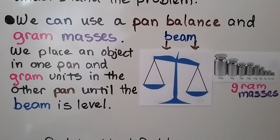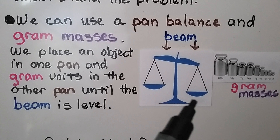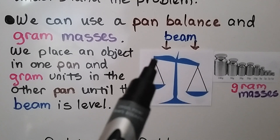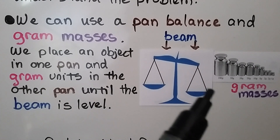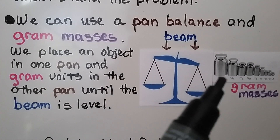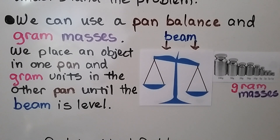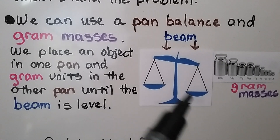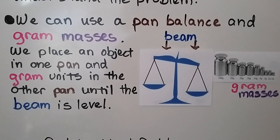We can use a pan balance and gram masses. We place an object in one pan and gram units in the other pan until the beam is level. We have gram masses in 100 grams, 50 grams, 20, 10, 5, 2, and 1. We just place little gram masses on one pan until the beam is level and we'll know how many grams the item in the other pan is.